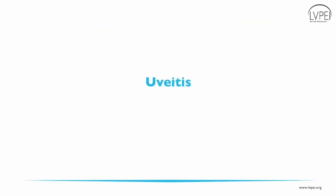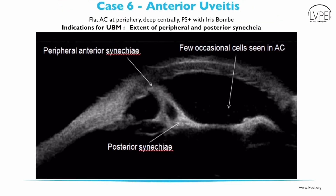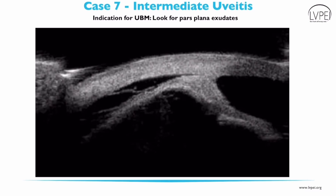Let's talk about the applications of UBM in patients with uveitis. In patients with anterior uveitis, UBM helps in finding the extent of peripheral anterior synechiae and posterior synechiae. This is very helpful in cases of anterior uveitis with complicated cataract along with small pupil. UBM is very helpful in diagnosing cases of intermediate uveitis and can tell us if the disease is active or inactive. Active intermediate uveitis will show low reflective dot echoes over the pars plana and ciliary body region, suggestive of active exudates.